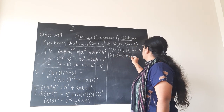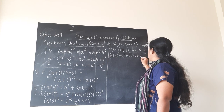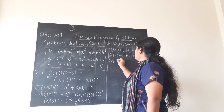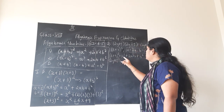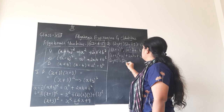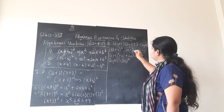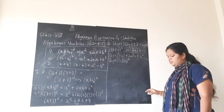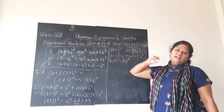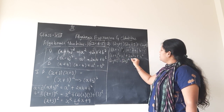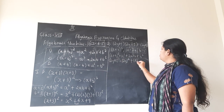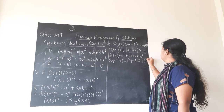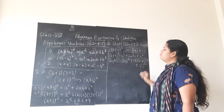Once I have my a and b values, substituting and applying the identity doesn't become difficult. a plus b whole square is a squared plus 2ab plus b squared. So in place of a plus b, I have 2y plus 5 whole square, which equals a squared — that is 2y whole square — plus 2 into a into b, which is 2 into 2y into 5, plus b squared — that is 5 squared.